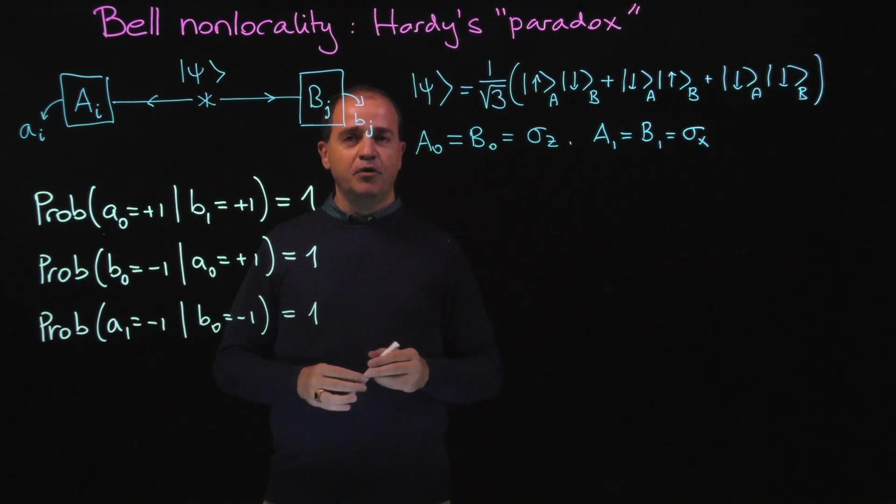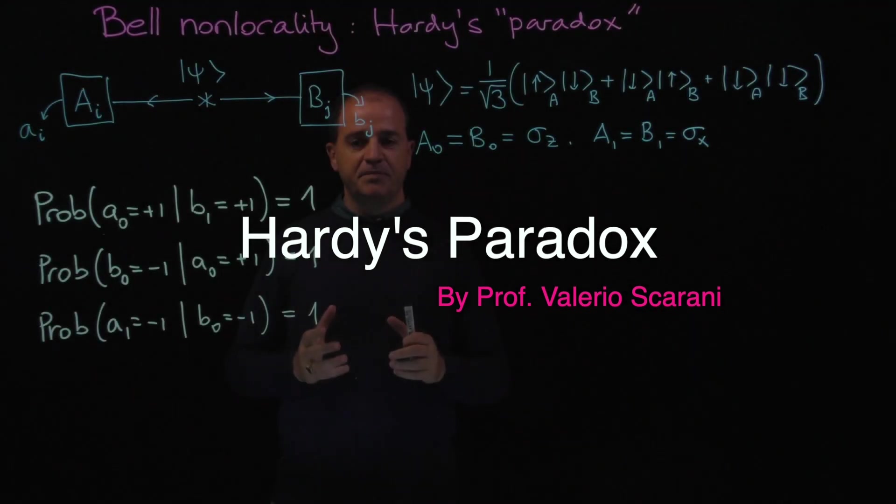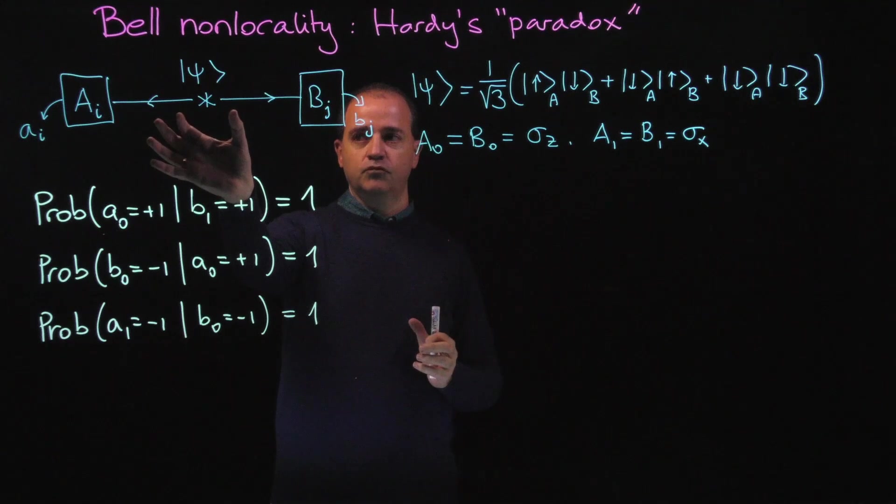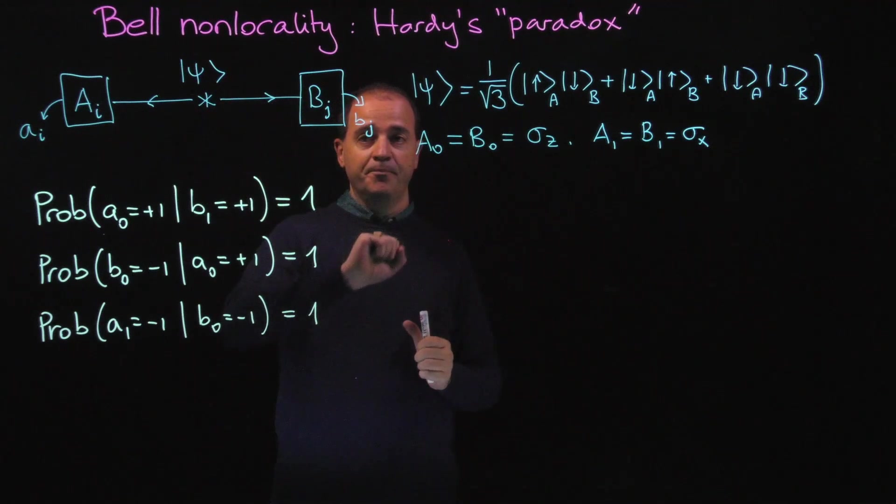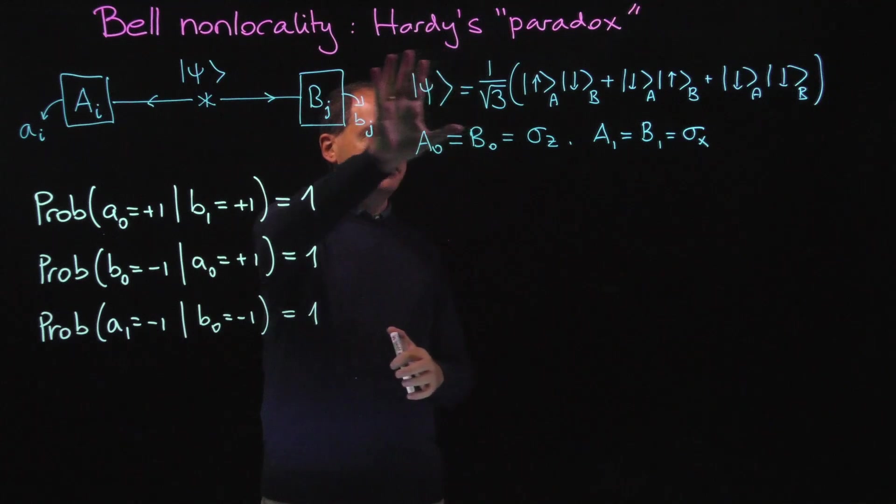I'm going to present an example of Bell nonlocality called Hardy's Paradox. The experiment consists of a source of two particles: one goes to the left, the other goes to the right. One is measured by Alice, the other is measured by Bob. The state prepared by the source is this one, written in spin notation.